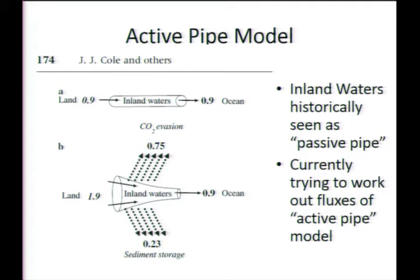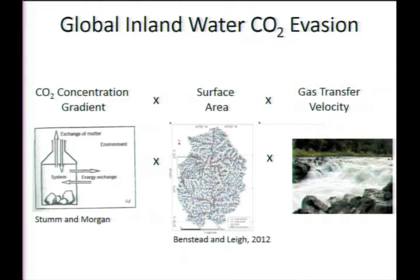Just like in the oceans, if you want to figure out how much CO2 is coming out of your inland waters, you need to constrain three parameters: you need to know how much CO2 is in the water, you need to know the surface area of your inland waters, and you need to know something about the physics that drives the exchange across the air-water interface.